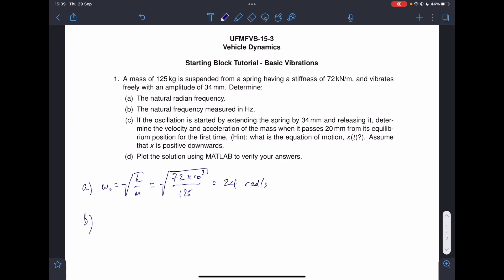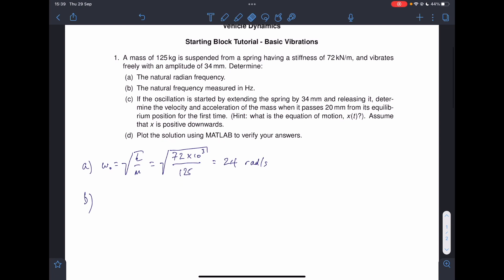Part B, what's the frequency in hertz? Well, the relationship between omega, which is radians per second, and hertz, if you write omega, it's going to be 2 pi times by the frequency in hertz. And so the frequency in hertz is going to be omega nought divided by 2 pi. And 24 divided by 2 pi, 3.82 hertz.